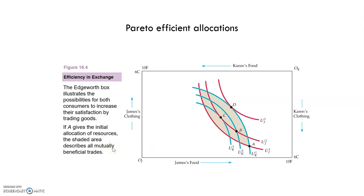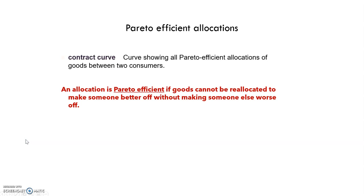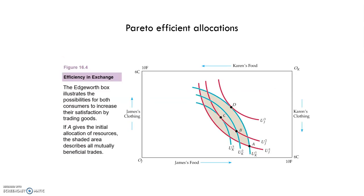If we want to compare these two allocations between them, we cannot say that one is more efficient than the other. We can only say that both of them are Pareto efficient. An allocation is Pareto efficient if goods cannot be reallocated to make someone better off without making someone else worse off. If we want to go from C to D, we will make James better off but we will make Karen worse off.